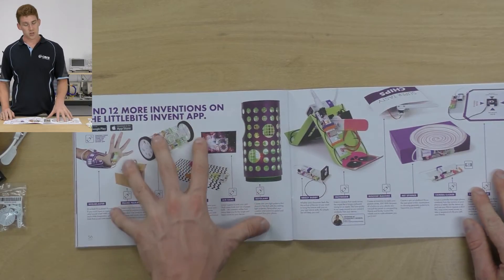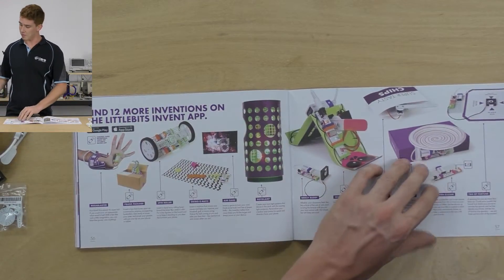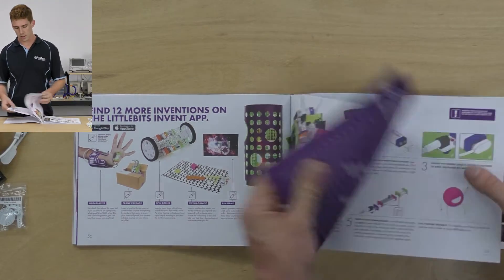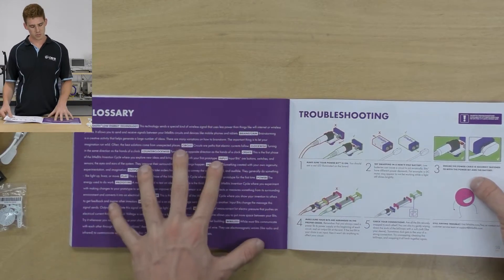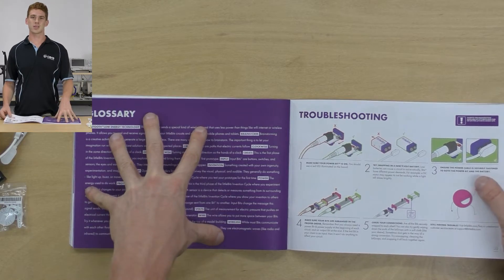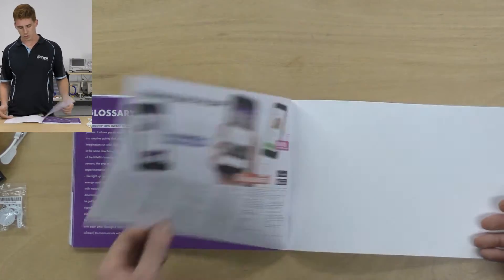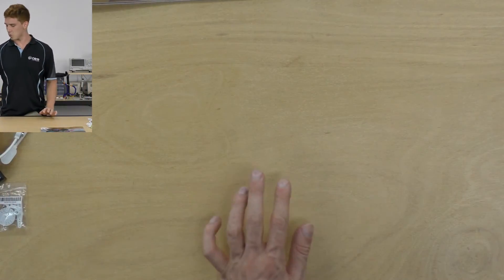So we get 12 more inventions on the Little Bits Invent app, which we have here. And then we go to our glossary, which is a really quick run through of all the topics that are covered in the kit. And then some troubleshooting steps if you need. So let's take a quick look at the app and how the Bluetooth bit does work.